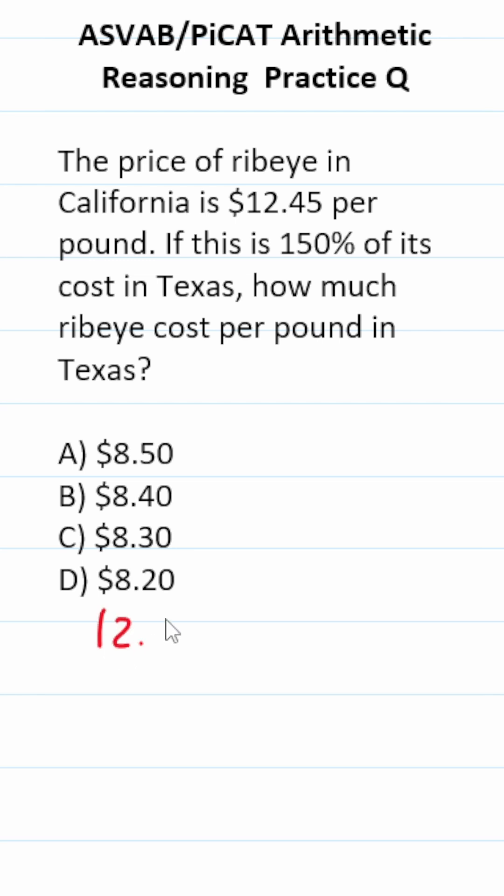So this is going to be $12.45 equals 150%. As a decimal, that's 1.5 of its cost. 'Of' means multiply, and we're going to let C represent cost.